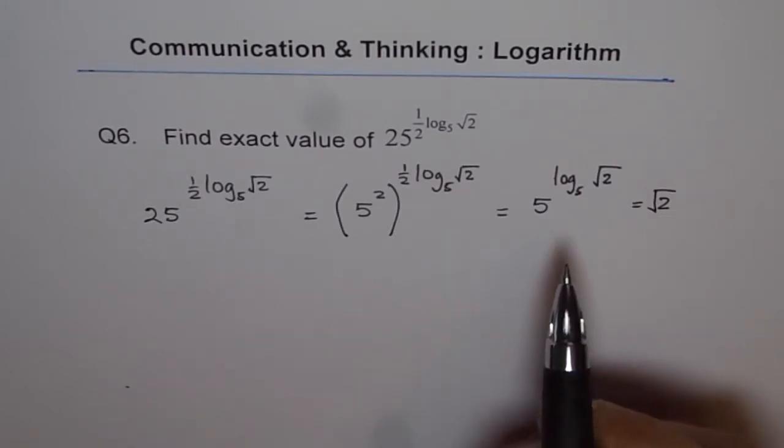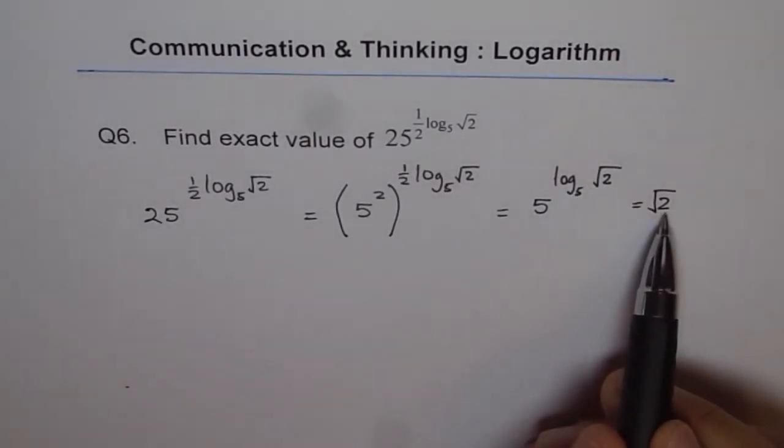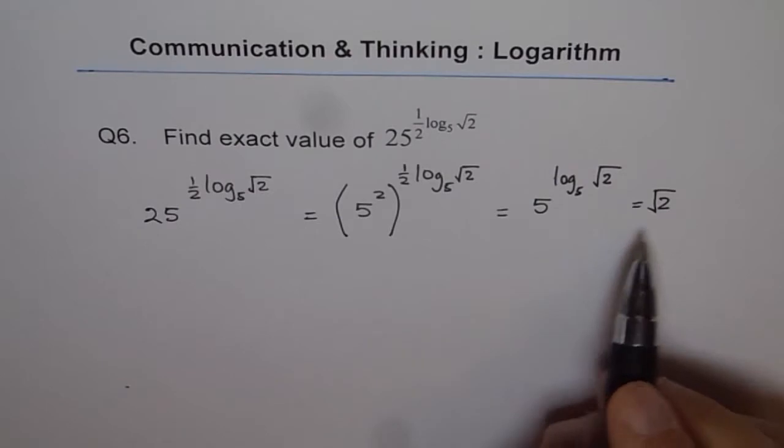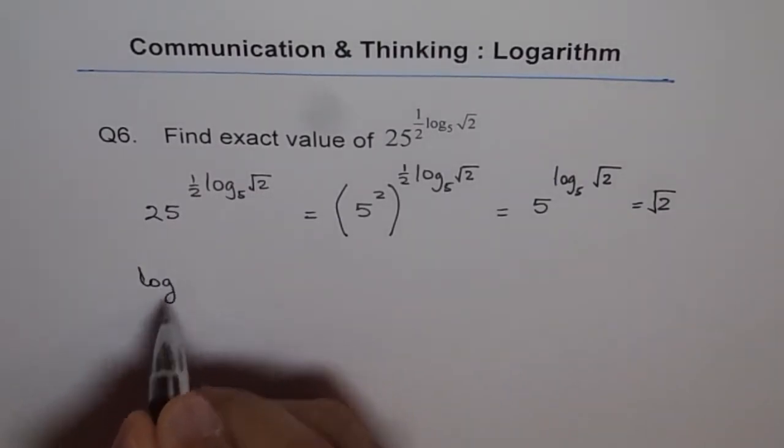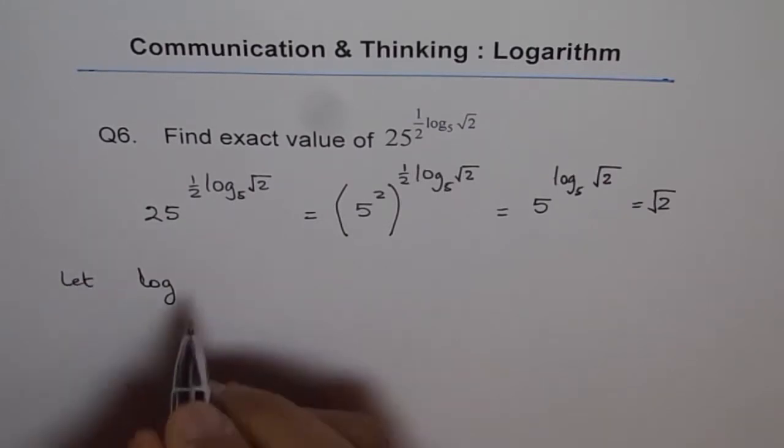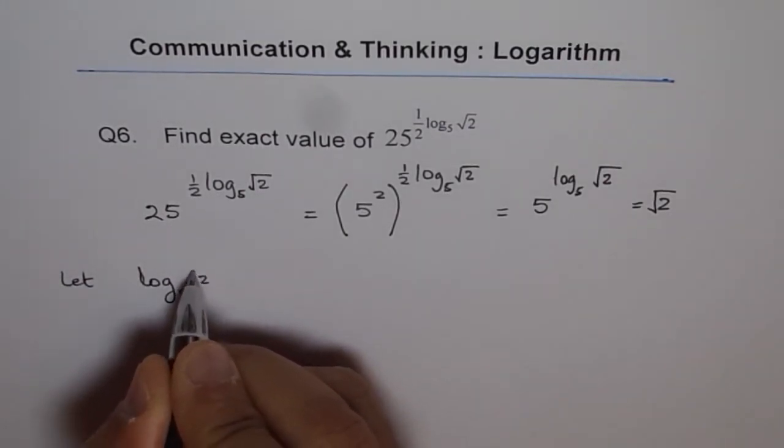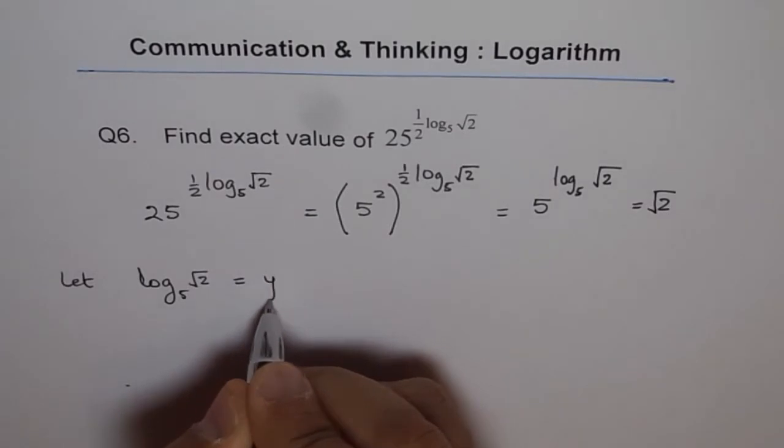Now I can actually prove you how this is equal to square root 2. So let me do that part in addition here. So we have, let's say let log to the base 5 of square root 2 equal to, let us say y.